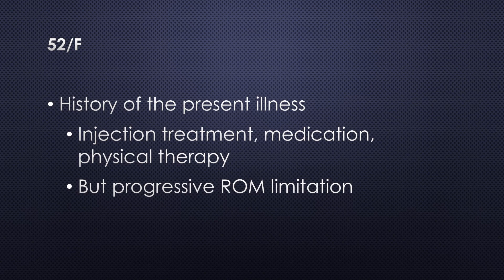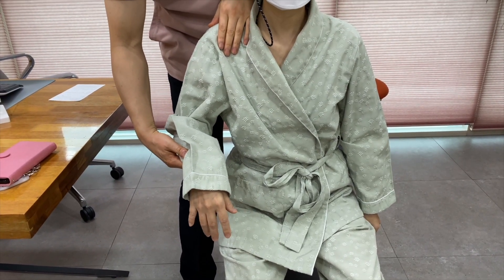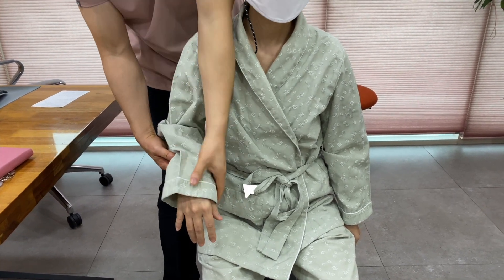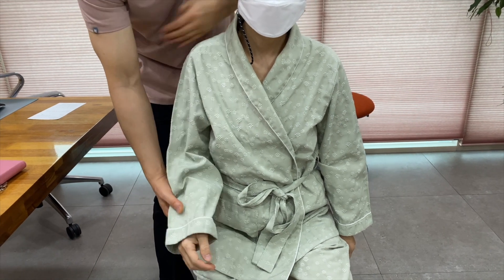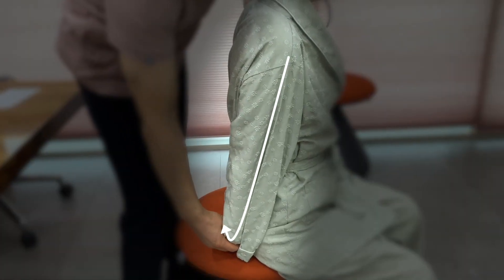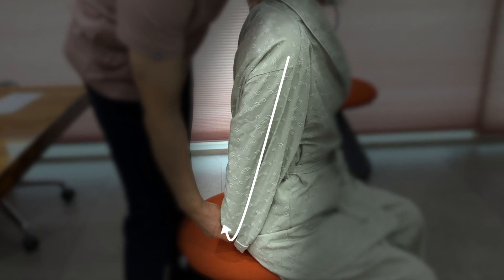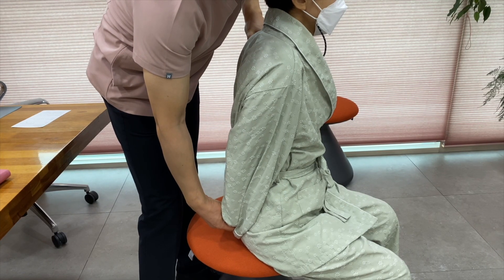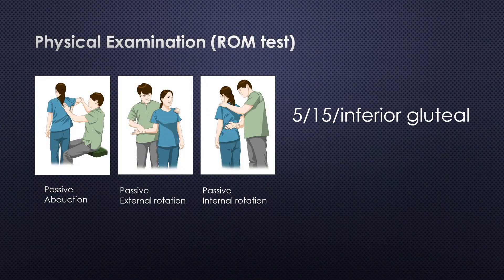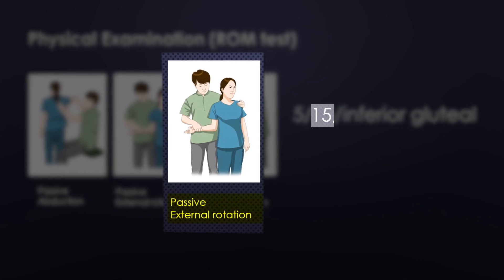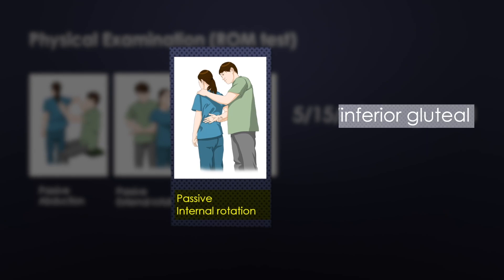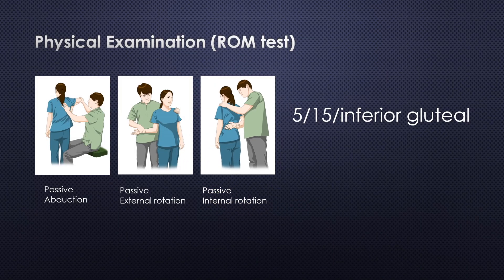But she feels that limitation of motion was worse. Here is the video of passive abduction, external rotation, and internal rotation. The passive ROM test shows a capsular pattern of limitation. Passive abduction is 5 degrees. Passive external rotation is 15 degrees. The right shoulder reaches the inferior gluteal region on passive internal rotation test.